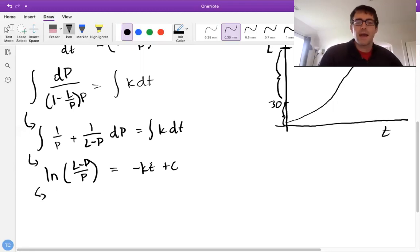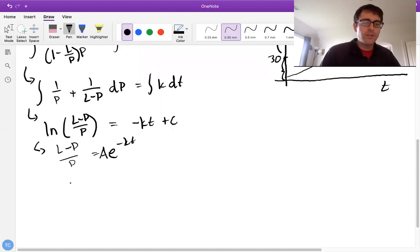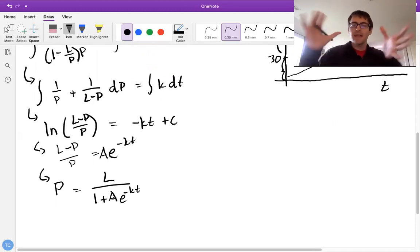And lastly, if we exponentiate both sides, we're going to end up with, well, first off, we're going to end up with L minus P over P equals E to the negative KT. We're going to pull this C down. We're going to call that an A. And what we really want to do is want to solve for P. If we do that, again, skipping a couple steps, we're going to end up with P equals L over one plus this term. Okay. And that's our solution.